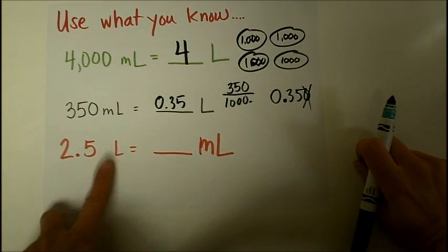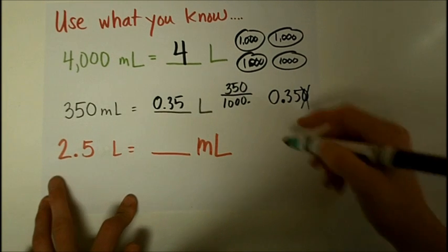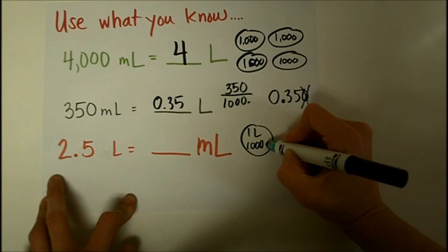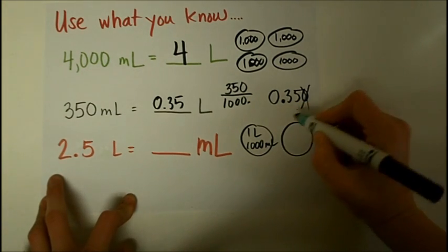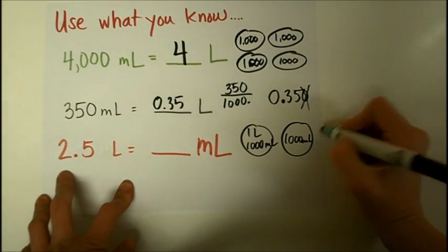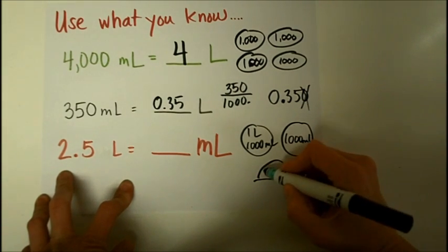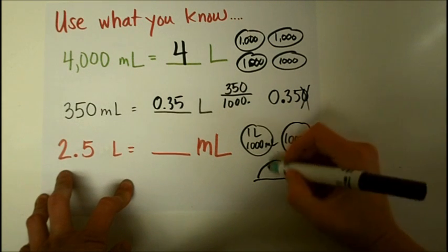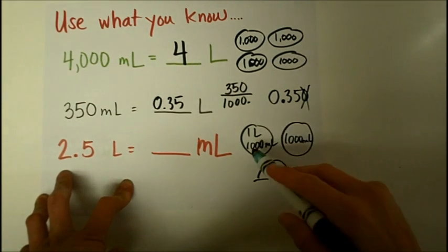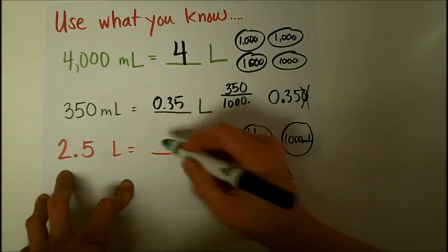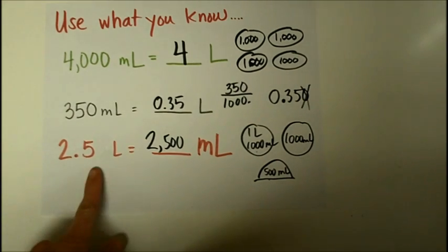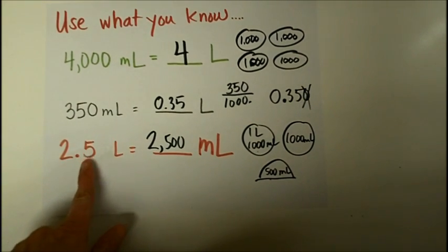And then finally, if I had 2½ liters, I'd wonder how many milliliters that was. Well, if I have 1 liter, that's also the same as 1,000 milliliters. I have 2 whole ones, so this would be 1,000 milliliters. And then a half of a liter would be half of the 1,000, or 500 milliliters. So 1,000 plus 1,000 plus 500 would be 2,500 milliliters in 2.5 liters.